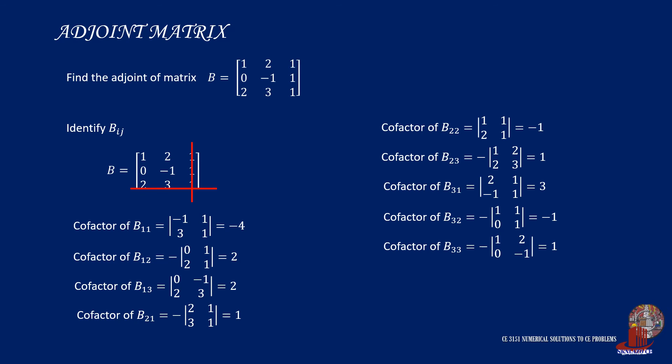We can summarize BIJ or the cofactor of matrix B as negative 4, 2, 2 for the first row; 1, negative 1, and 1 for the second; and 3, negative 1, and 1 for the third.